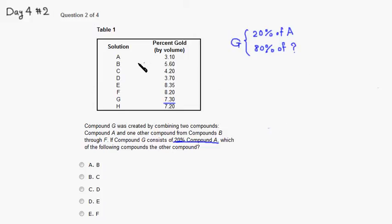Alright, so we know that compound A has 3.1% gold, so 3.1 times 0.2, plus we don't know what the percentage gold is for the unknown compound, but we have to multiply that number by 0.8, and this has to be compound G, so 7.3.